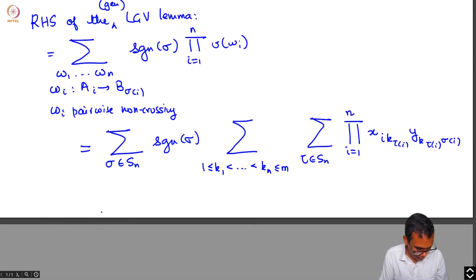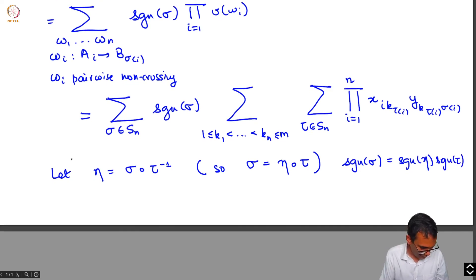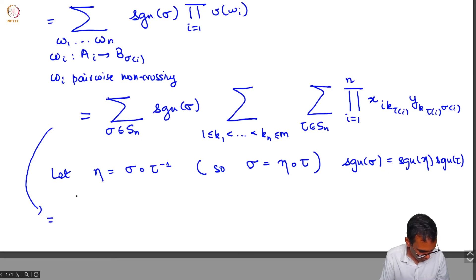Then you have a sum over permutations in Sn, and the path is going from i to k tau i, and then going from k tau i to sigma i. Now let's rewrite the sum. Let eta be the permutation sigma composed with tau inverse, which means that sigma is eta composed with tau.